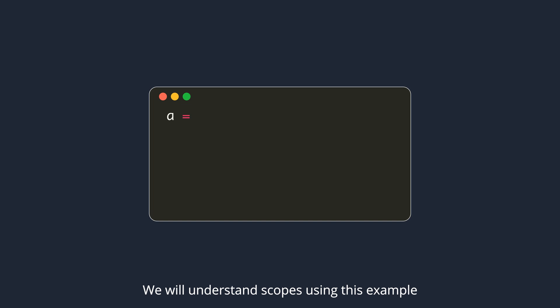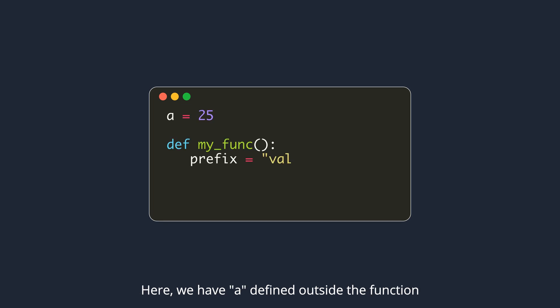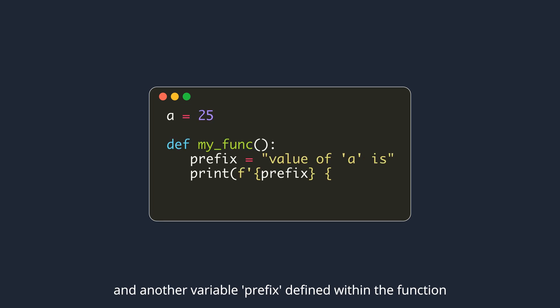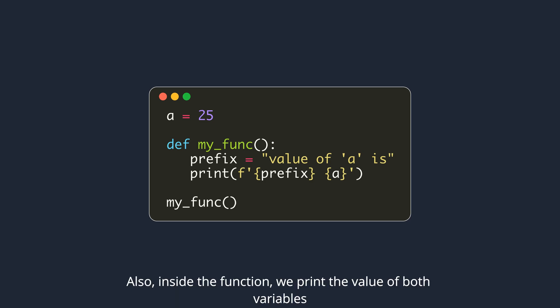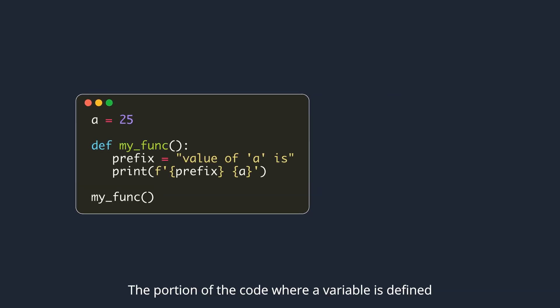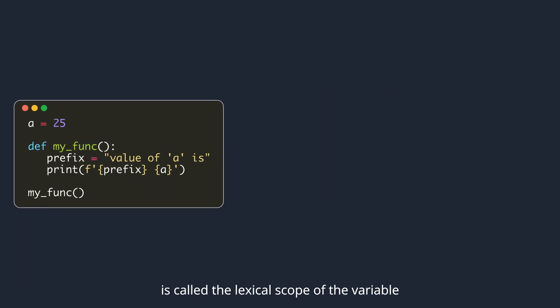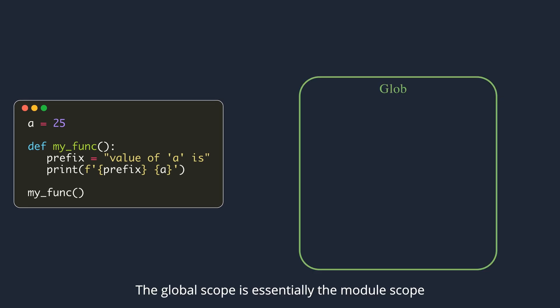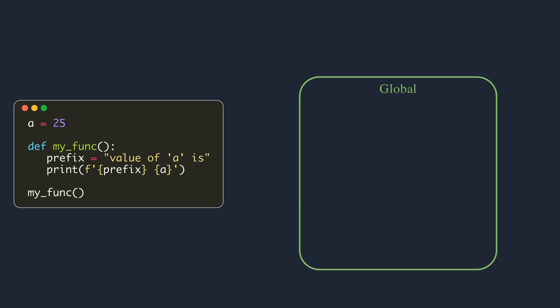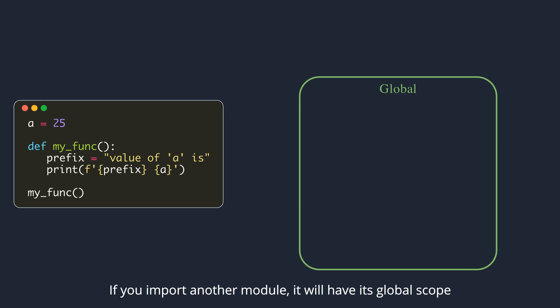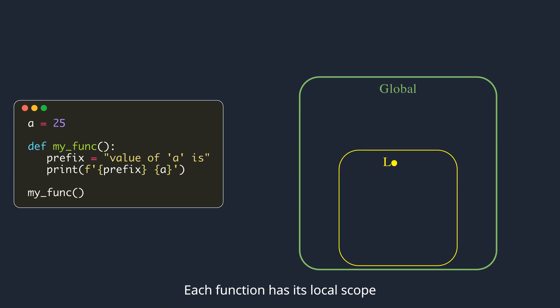You will understand scopes using this example. Here we have a defined outside the function, and another variable prefix defined within the function. Inside the function, we print the value of both variables. A portion of the code where a variable is defined is called the lexical scope of the variable. Global scope is essentially the module scope, which means it spans a single file only. If you import another module, it will have its own global scope. Each function has its local scope, and every time the function is called, a new scope is created.